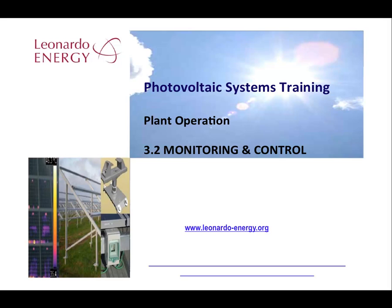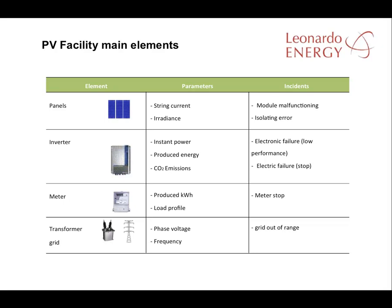In this module we look at the management of monitoring and control during plant operation. Here we can see the elements that should be monitored in a solar PV facility. The main elements to be monitored are the inverters and meters. The parameters to be monitored in the inverter are the instant power, energy produced, and CO2 emissions.